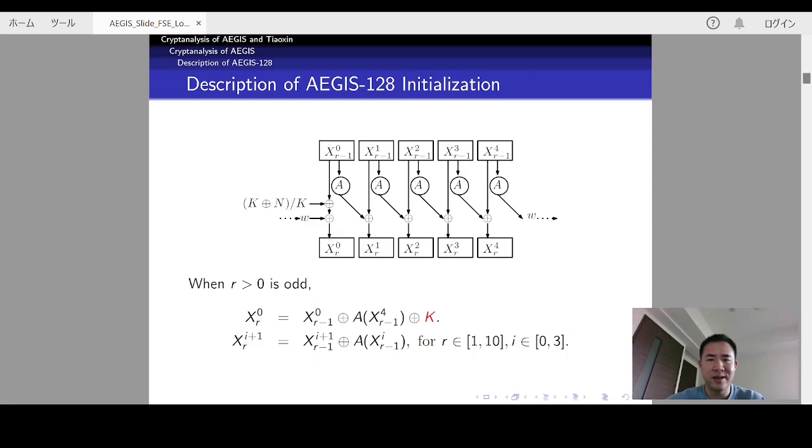This is an illustration of the AEGIS-128 round function. As you can see, the state is divided into five blocks, and each block is of size 128 bits. In this figure, A denotes the AES round function by omitting the addRoundConstant operation. The round function slightly differs depending on the round number.